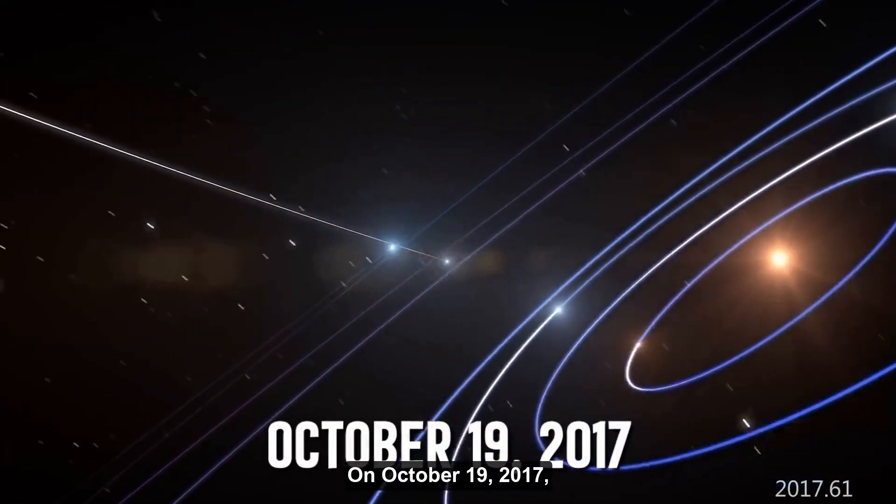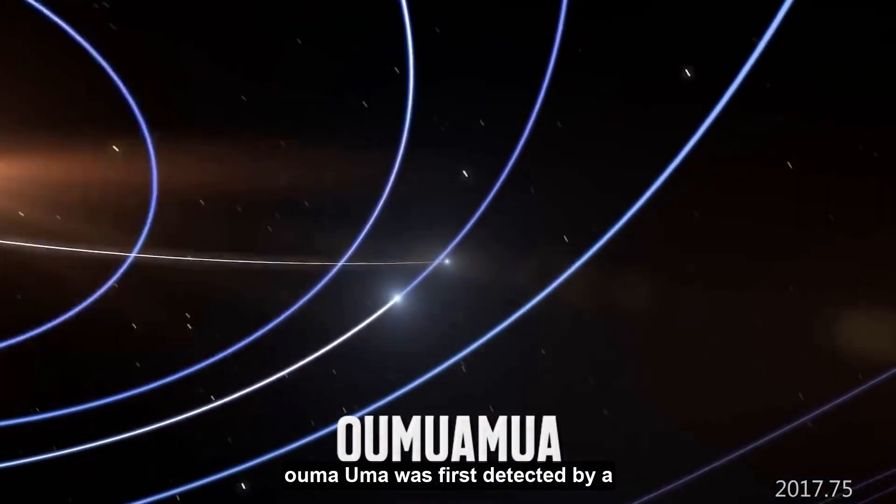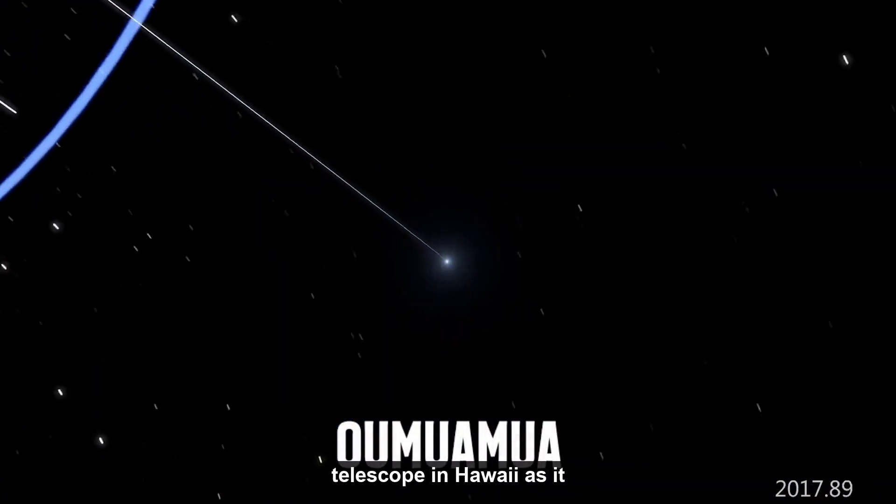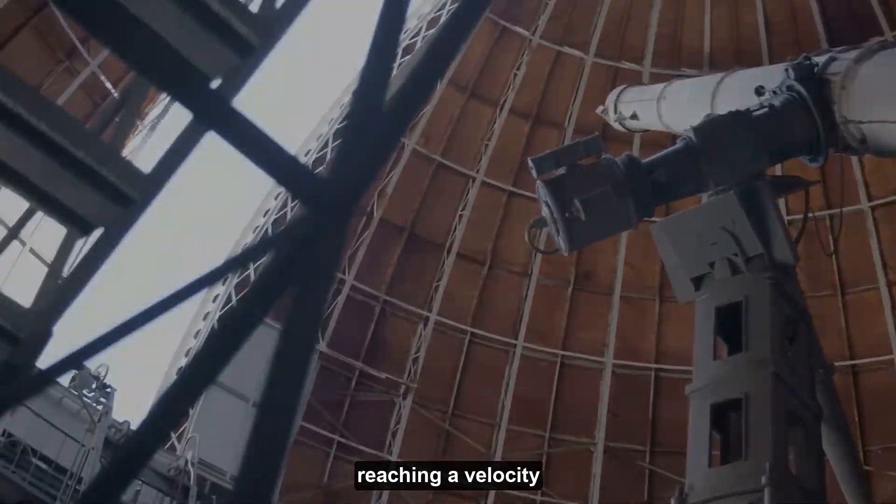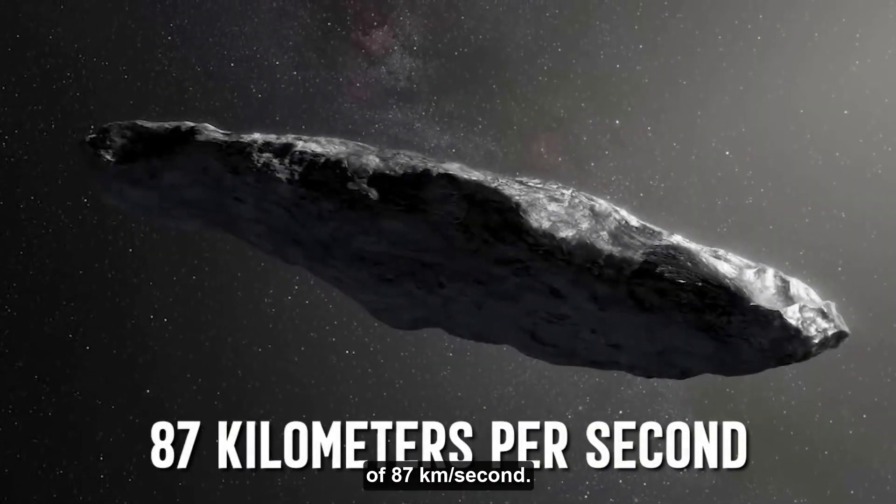On October 19, 2017, Oumuamua was first detected by a telescope in Hawaii as it raced past the Sun, reaching a velocity of 87 kilometers per second.